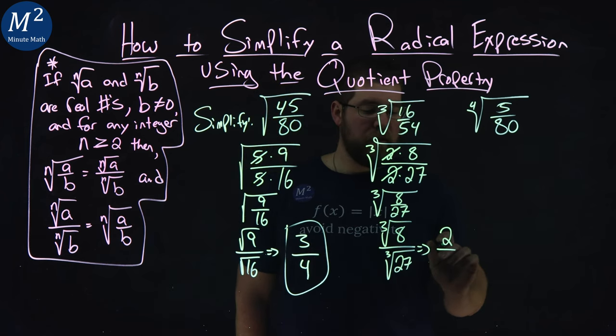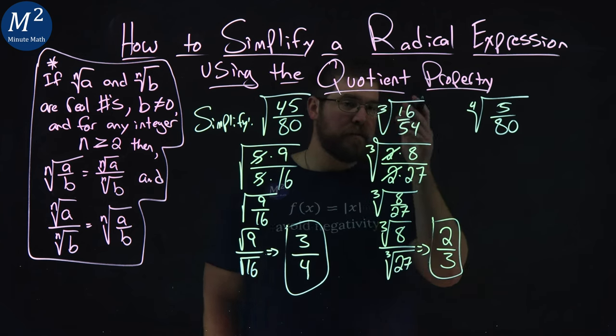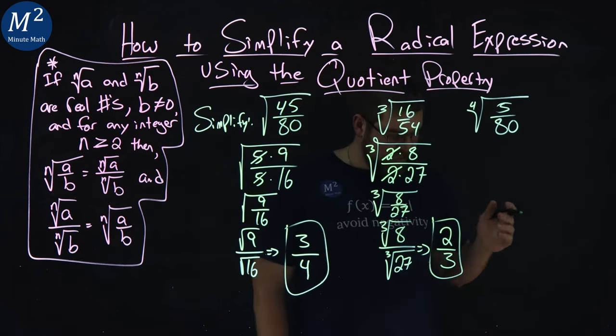Third root of 8, like I said, is 2 and the third root of 27 is 3 and we have our simplified answer. The third root of 16 over 54 is just 2/3.